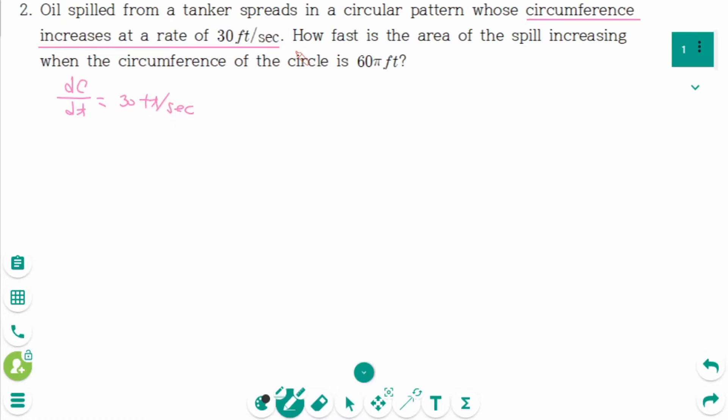How fast is the area of the spill increasing? That means we are looking for dA/dt when the circumference of the circle is 60 pi feet: C equals 60 pi feet. The area of the circle is pi r squared. The circumference C equals 2 pi r.